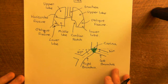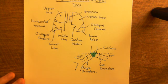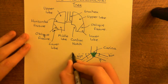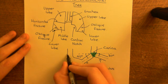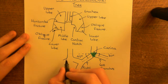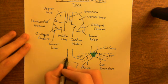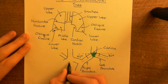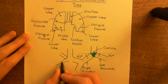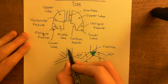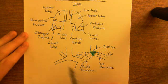Let's start off with this branch that is going to supply the upper lobe. It's going to split into three portions, three bronchi. So here's one that's going to go up, and then the other two are going to go forwards and one going backwards as well. So there's one going up, one going back, and one going forwards.